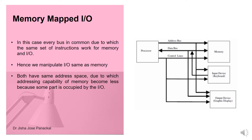In memory-mapped I/O, every bus is common, so the same set of instructions works for both memory and I/O. The bus is shared between memory and input/output devices, and we manipulate I/O the same way as memory. Both share the same address space, which means the addressing capability of memory becomes less because some part is occupied by I/O.